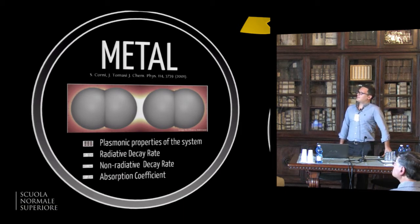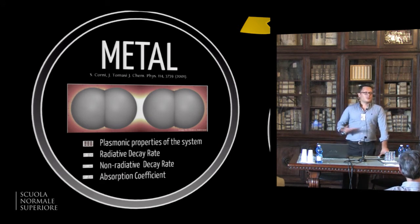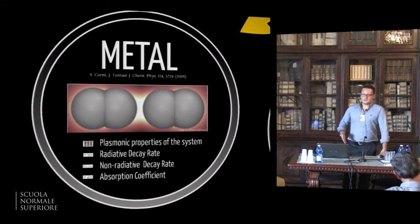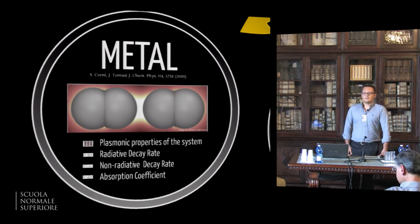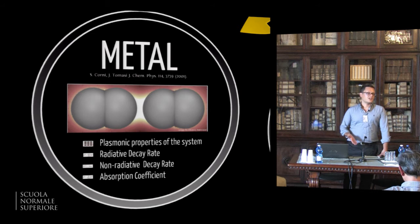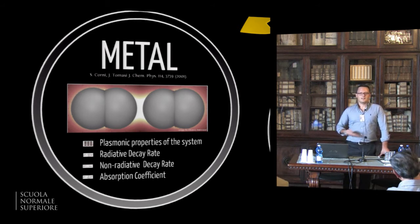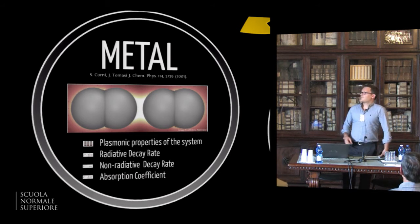A very important extension of the PCM model is the treatment of metal nanoparticles, which originated from the work of Stefano Corny in 2001. The idea is that, similarly to what PCM does for the solvent, you can also model other objects like nanoparticles simply by considering them as a continuum body, characterized by their experimental permittivity — static and optical permittivities. This model is very simple, like PCM, but it is very powerful when you want to look at the dielectric response of the metal particles, for example the plasmonic properties of the system. Such a model is a crude approximation if you are looking at the chemical interaction between molecules and metal nanoparticles, since the metal is treated as a continuum body.